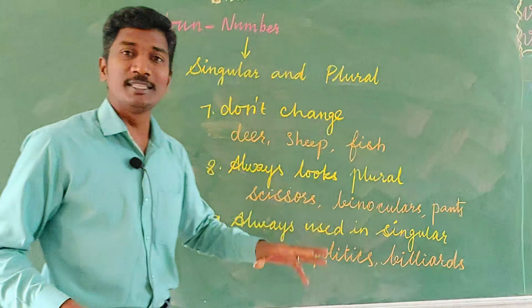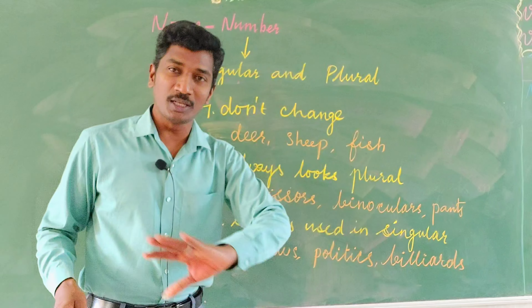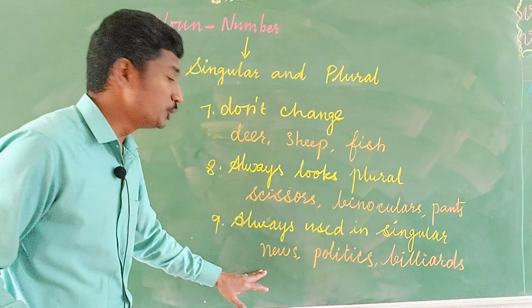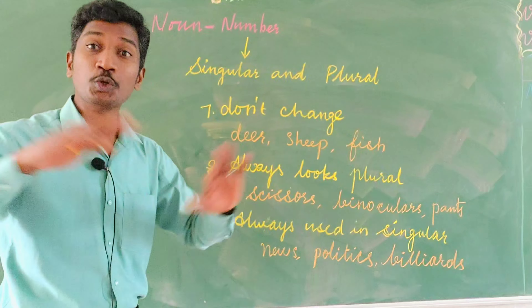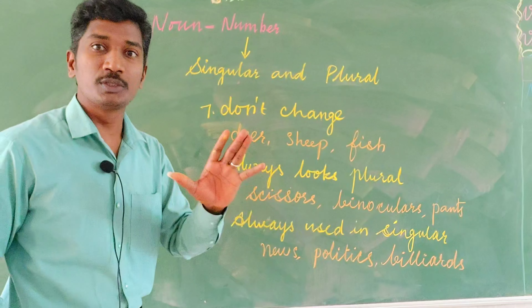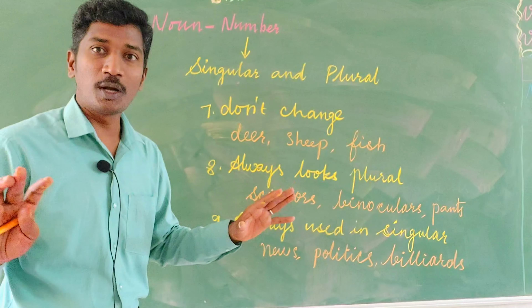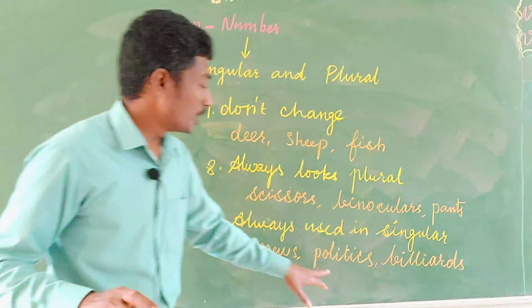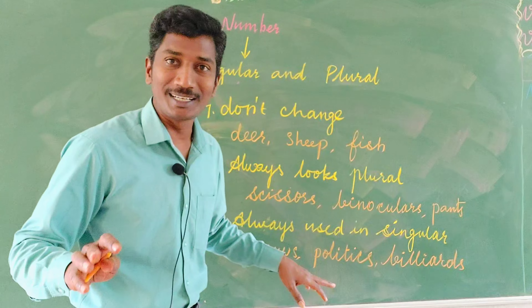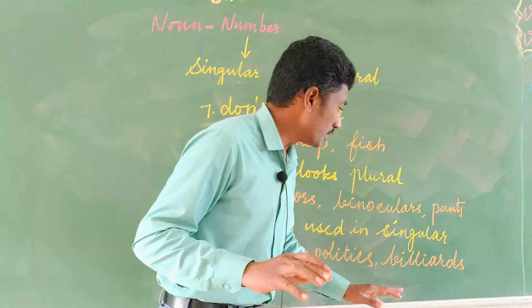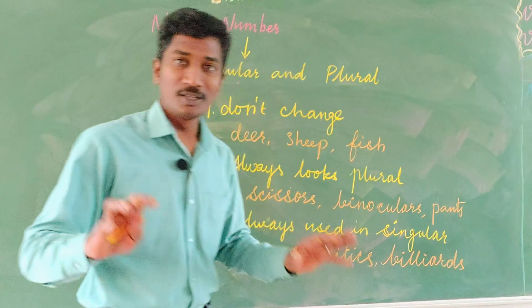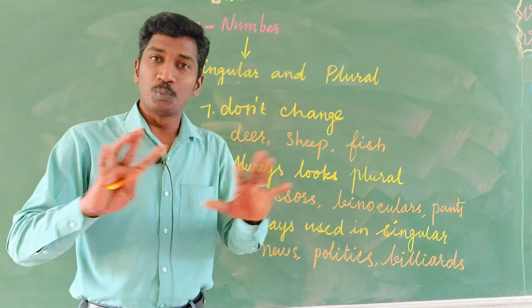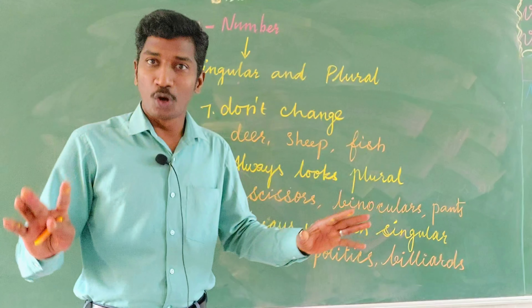Next, some words are always used in singular — they do not have plural forms. For example, we do not say 'newses', only 'news'. There is no 'newses' — nobody says 'what are the newses in the city?' Politics — no 'politic', only 'politics'. And billiards. So they always go in singular and cannot be used in plural.